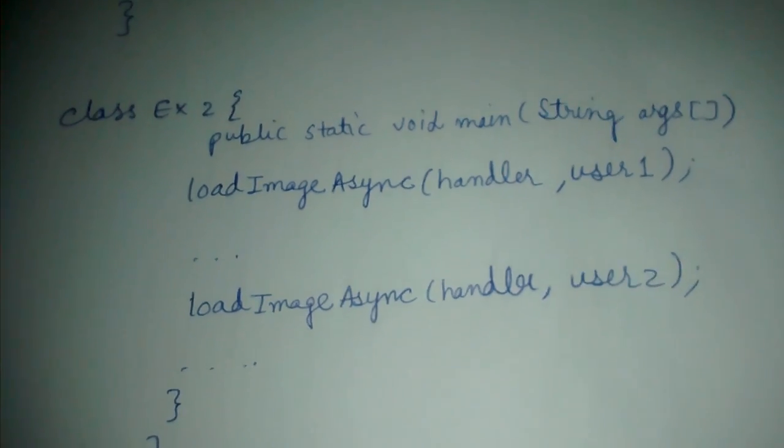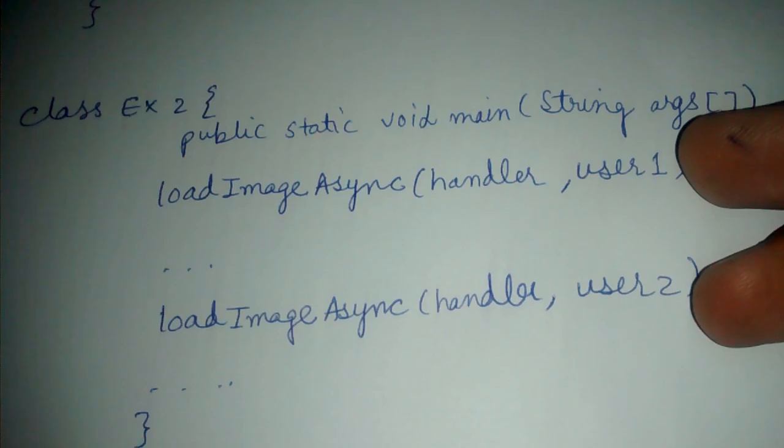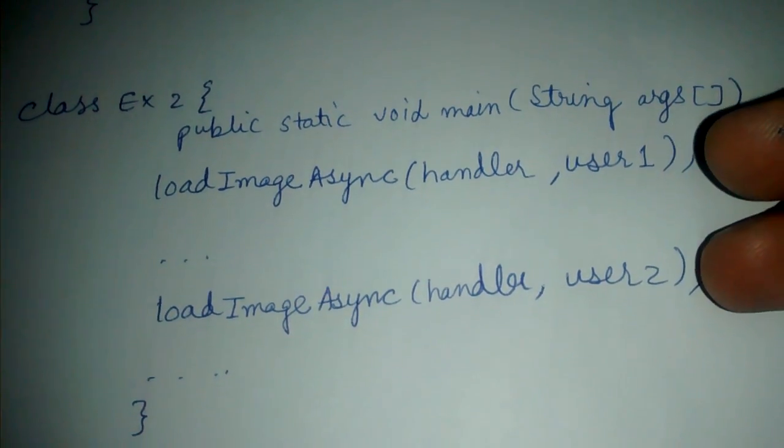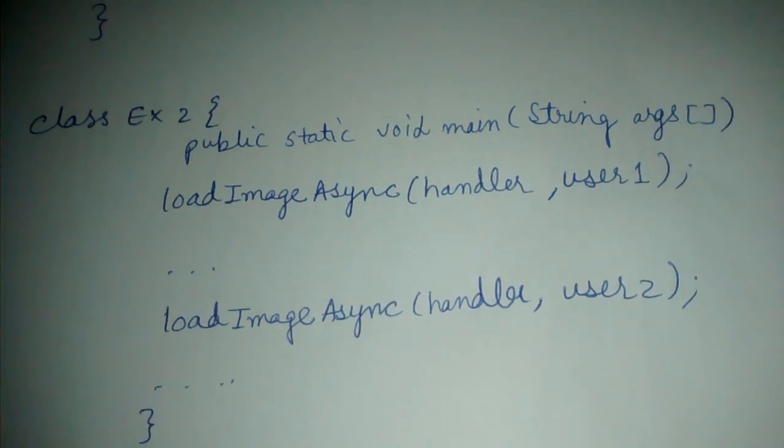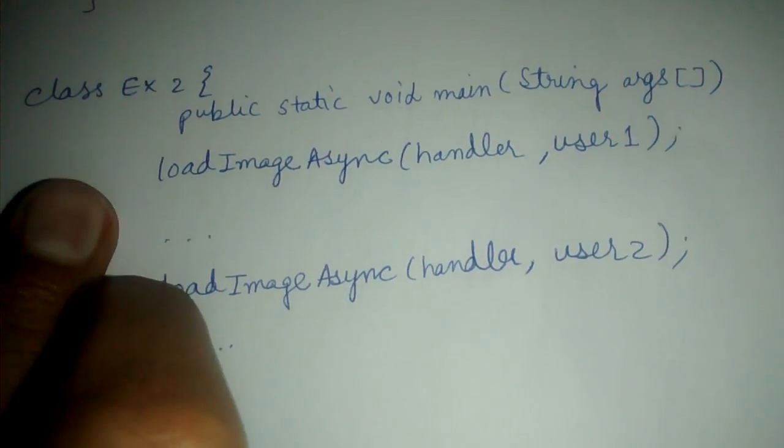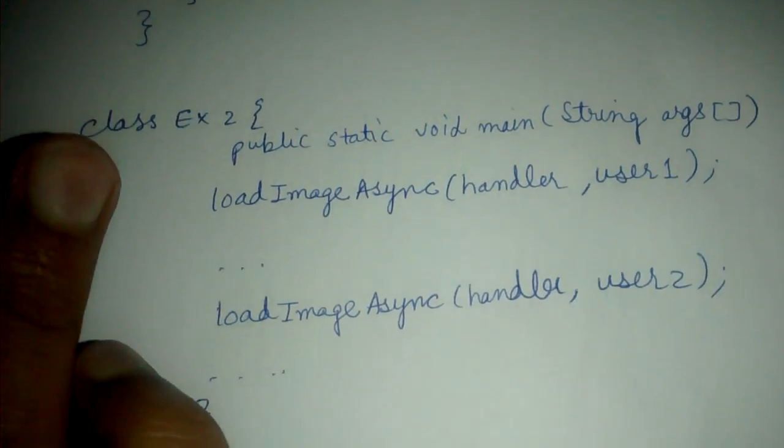So you are passing some user state to distinguish these two calls. When the handler is performing some action, it should know which user or which call it is performing that action on.